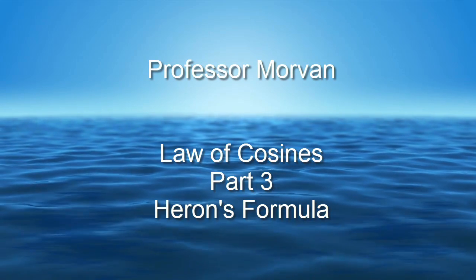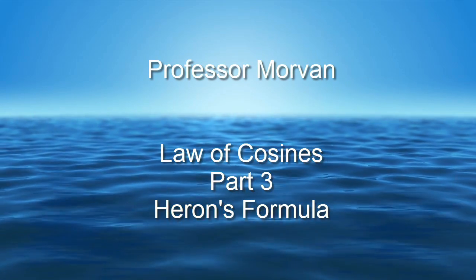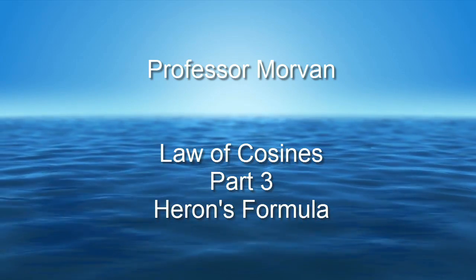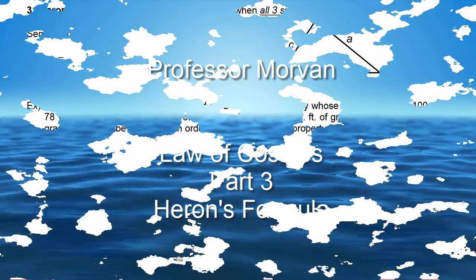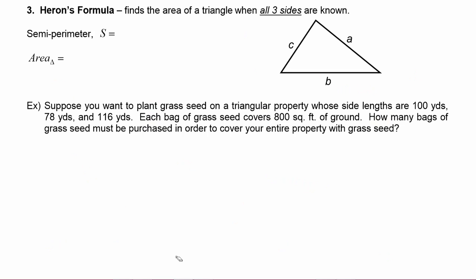In part three of our lesson on law of cosines, you will learn how to use Heron's formula. Heron's formula finds the area of a triangle when all three sides are known.